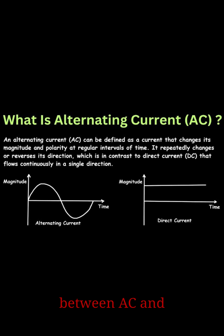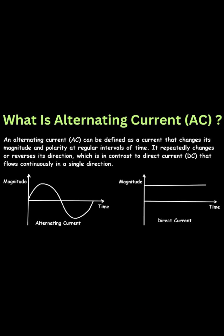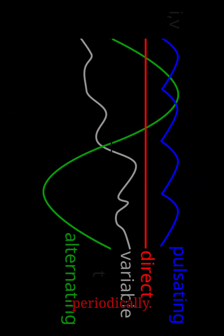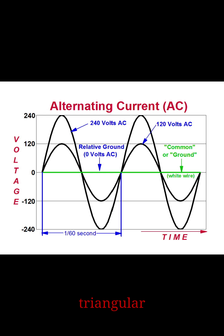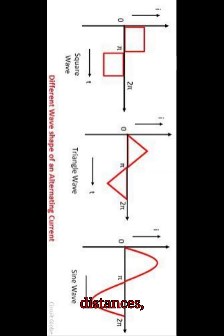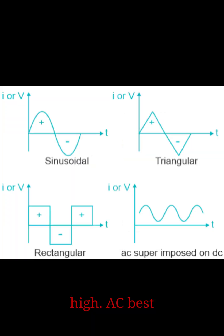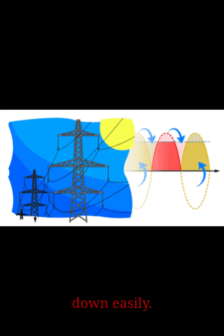Key differences between AC and DC: Direction of flow — DC flows only in one direction, while AC reverses direction periodically. Waveform — DC is a straight constant line; AC is a sine wave, sometimes square or triangular. Transmission — DC is not efficient for long distances due to high power loss, whereas AC is best for long-distance transmission as voltage can be stepped up or down easily.